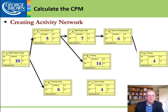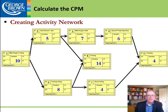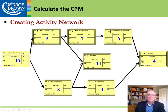We click through step by step, putting in the predecessors and successors shown on the previous slide to show all the connections. Looking at that, can you see a problem? Flooring does not have a successor activity — that would not be following best practices. So we want to include that. Now it's connected and the network is complete.